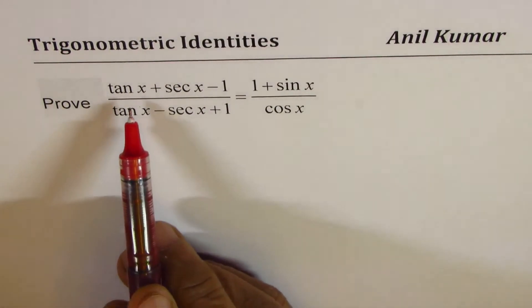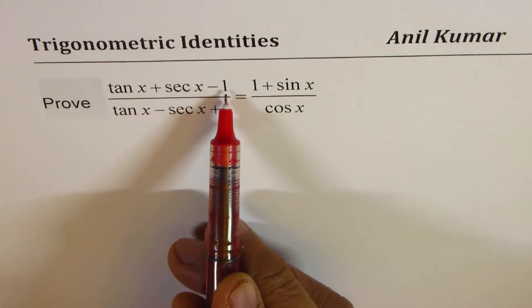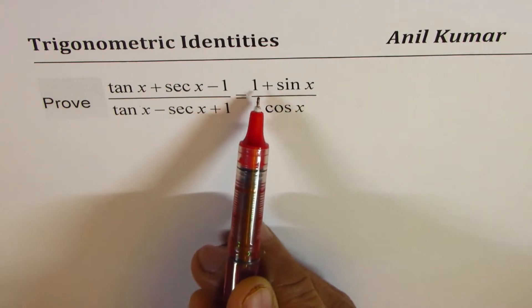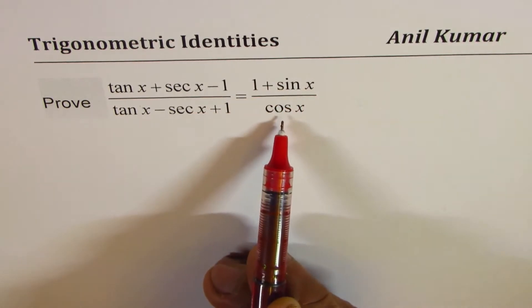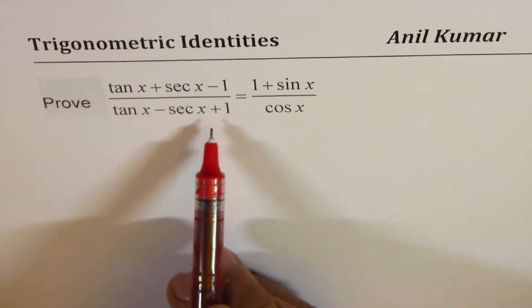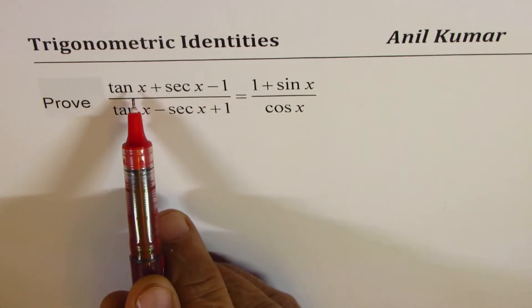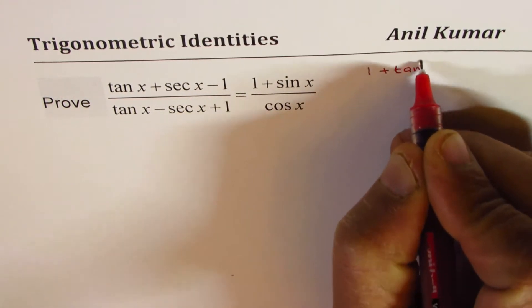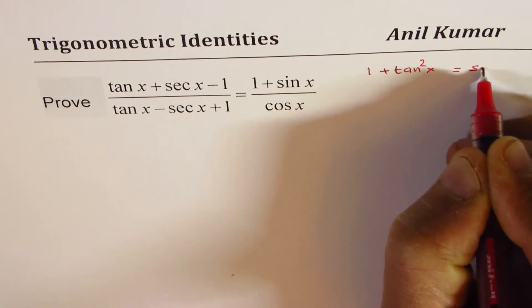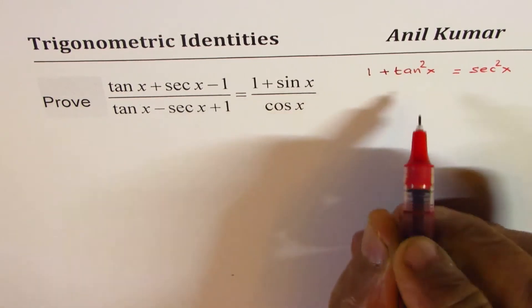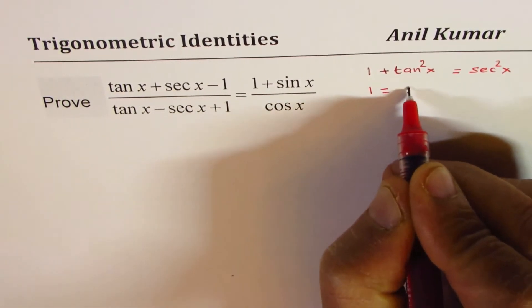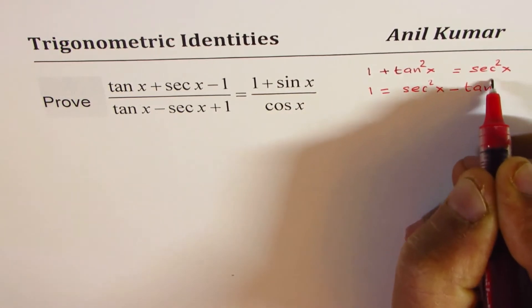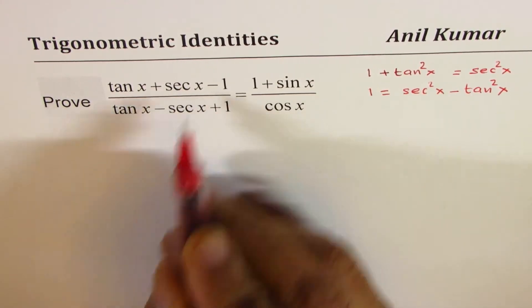Now we need to prove tan x plus secant x minus 1 divided by tan x minus secant x plus 1 equals to 1 plus sin x over cos x. The Pythagorean identity which relates tan and secant is 1 plus tan square x equals to secant square x. You can rearrange and write it as 1 equals to secant square x minus tan square x, and that is what we are going to use here.